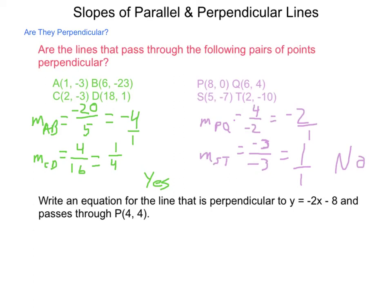Lastly, write an equation of a line that is perpendicular to y = -2x - 8 and passes through the point P(4, 4). Again we will be able to use our slope and a point, so let's use point-slope form: y - y1 = m(x - x1). Parts that we know right away are y1 and x1, so we have y - 4 equals our slope times x - 4.